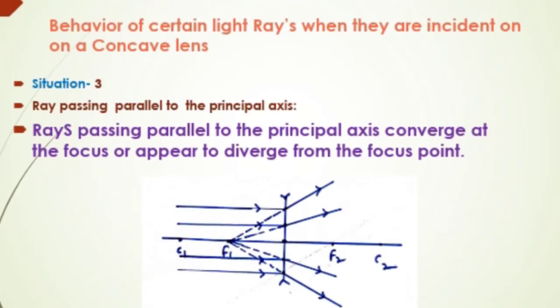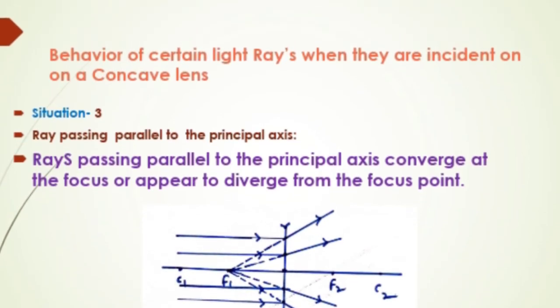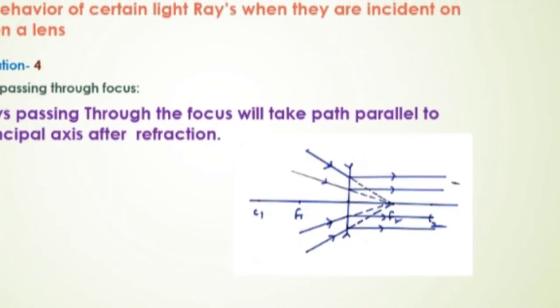Rule 3: Rays passing parallel to the principal axis converge at the focus or appear to diverge from the focus point.